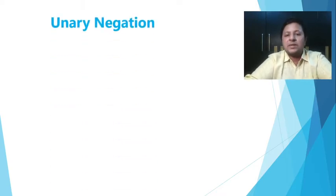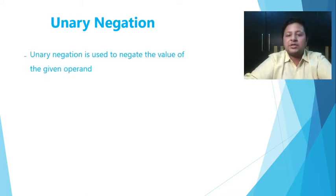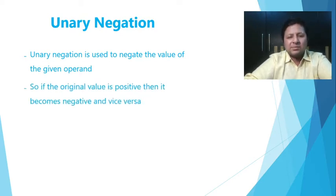Let's start with the individual unary operator. The first one is unary negation, a very simple one. It is going to reverse the sign of the given operand. So if I have an operand being a negative number, it becomes positive. If it is positive, it becomes negative. So that's the basic job of unary negation. It is used to negate the value of the given operand. So a simple explanation that if the original value is positive, then it becomes negative and vice versa. So let's have a look at the example. So if I have an original operand, let's say a which is 5, b equal to minus a is going to negate the value of a and it's going to assign it to b.